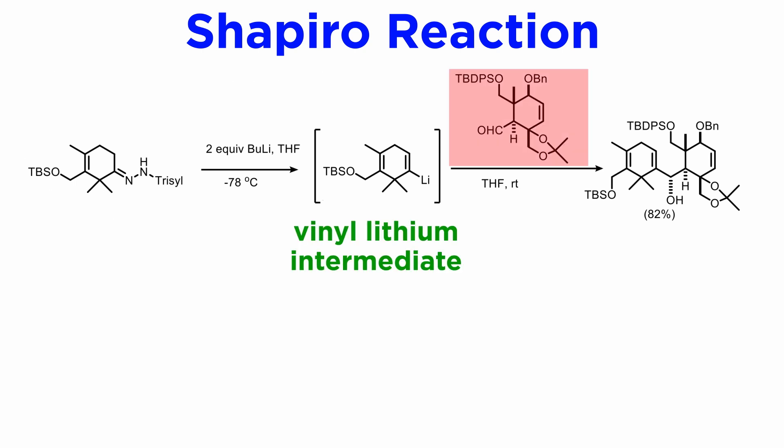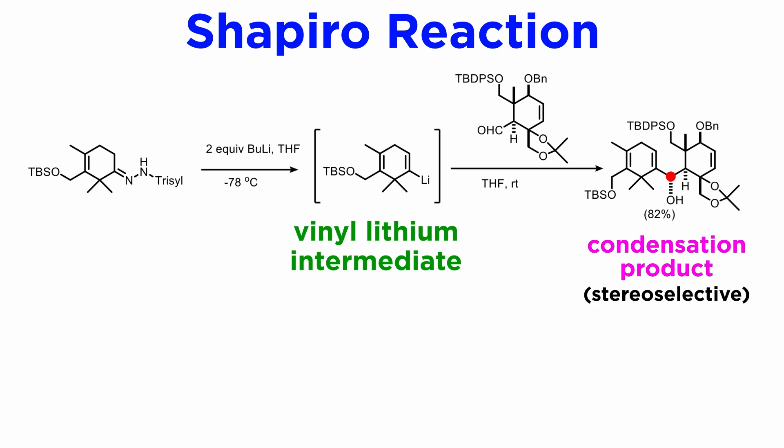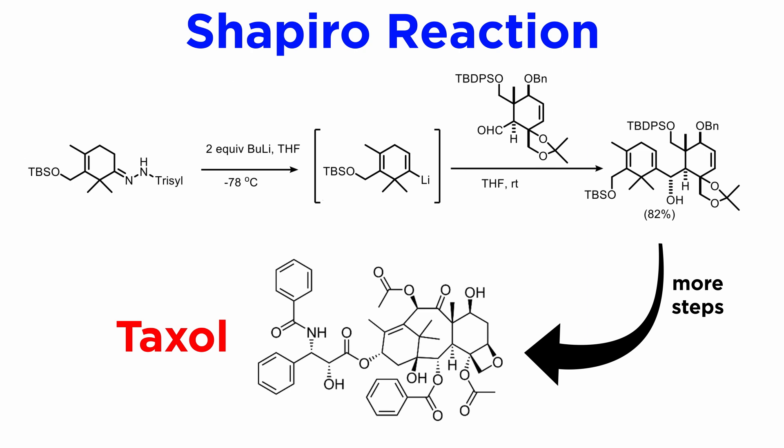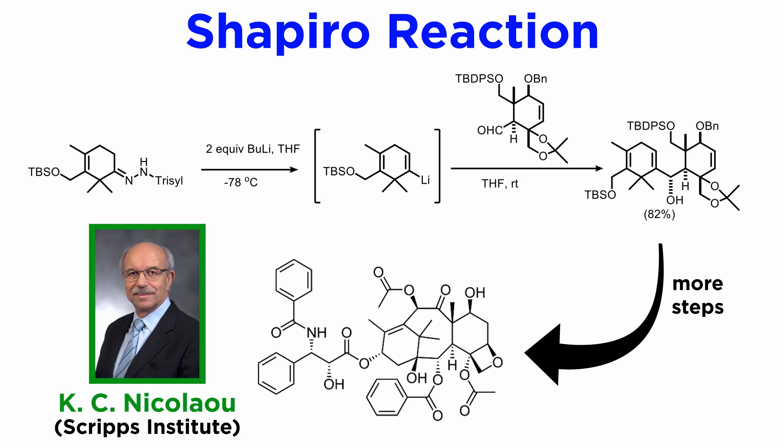The vinyl-lithium intermediate is quenched at low temperature by a very complex aldehyde to yield the condensation product in very good yield upon warming to room temperature. An added bonus is that under the reaction conditions, the formation of the new stereogenic center is quite selective, yielding the alpha alcohol which matches the stereochemistry of the product. Taxol is then obtained in a number of steps which form the B ring and allow for the correct positioning of each functional group. It is interesting that a master synthetic chemist like Professor Nicolaou has chosen the Shapiro reaction as a key step in creating this complex molecule, which is only one of many applications of this important reaction.